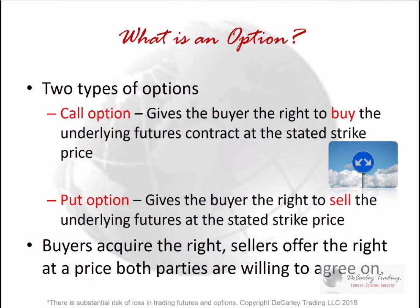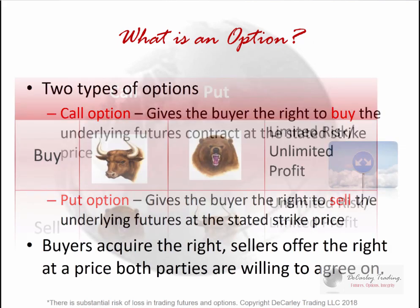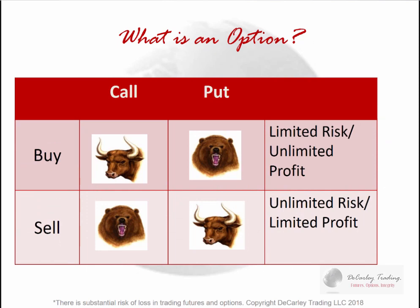There are so many things that determine the value of an option before expiration — time value, volatility, demand, expected volatility. All these things will change the value of an option even if the futures price doesn't change. It's a little more complex when figuring out how much money you might make or lose. At expiration, it's easy to figure out the risk, but anytime before expiration, it's kind of a guessing game.